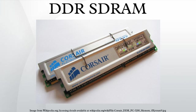Organization: the notation like 64M×4 means that the memory matrix has 64 million 4-bit storage locations. There are ×4, ×8, and ×16 DDR chips.